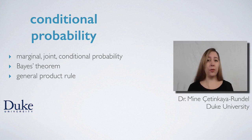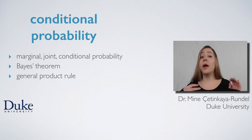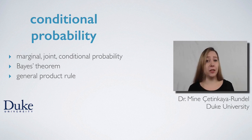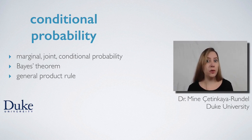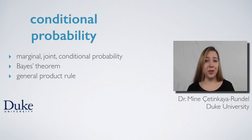Remember that previously we've talked about the probability of A and B equals probability of A times probability of B, and we said that there was a caveat to this rule: the events had to be independent. So we'll wrap up the discussion in this video with what do we do when the events are dependent, or if we don't know and cannot check whether the events are independent or not.